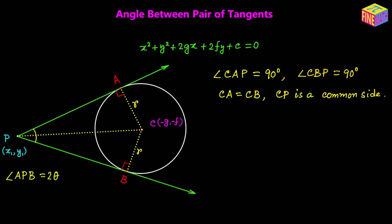Based on the RHS criteria of congruence, we can say that these two triangles are congruent. We have two right triangles with the same hypotenuse and one equal side, so triangle CAP is congruent to triangle CBP. Since angle APB is 2 times theta, angles CPA and CPB will be equal — they are corresponding angles opposite to the equal sides.